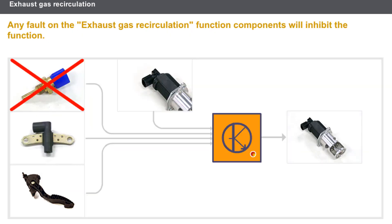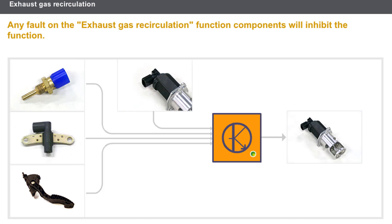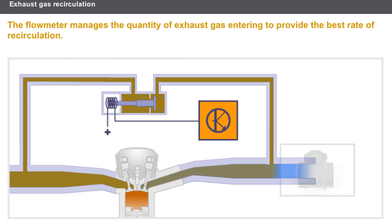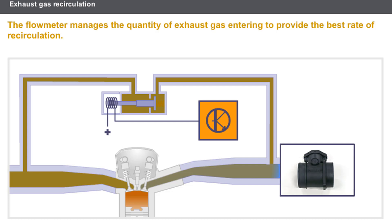Any fault on the exhaust gas recirculation function components will inhibit the function. Fitted after the air filter, the flow meter measures the mass of clean air taken in by the engine. This information allows the computer to manage the quantity of exhaust gas entering to provide the best rate of recirculation.